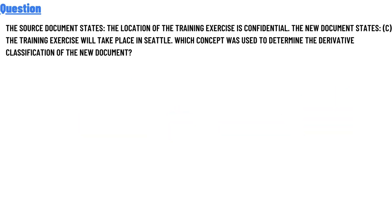Our today's question is: the source document states the location of the training exercise is confidential. The new document states the training exercise will take place in Seattle. Which concepts are used to determine the derivative classifications of the new document?